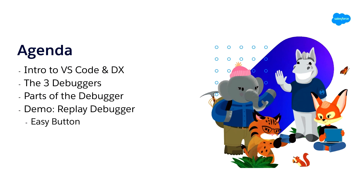We're going to start off with an introduction on VS Code and how exactly the IDE fits into your application development lifecycle. Then we're going to talk about the three different flavors of debuggers that we currently offer, and then lastly Randy's going to tell us about the different steps behind the scenes happening for the Replay Debugger, and then show off our new easy button in the IDE.